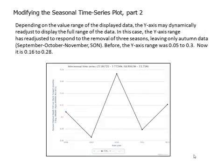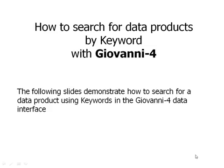Depending on the value range of the displayed data, the y-axis may dynamically readjust to display the full range of the data. In this case, the y-axis range has readjusted in response to the removal of three seasons, leaving only autumn data (SON). Before, the y-axis range was 0.05 to 0.3; now it is 0.16 to 0.28.